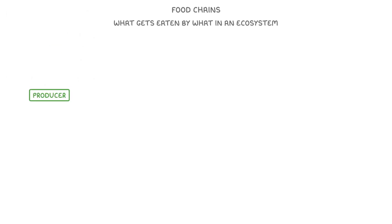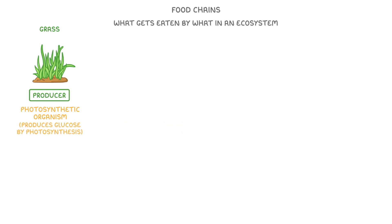All food chains start with a producer, which is some kind of photosynthetic organism, like a green plant or alga. We're going to use grass here as our example. All photosynthetic means is that the organism can produce glucose by photosynthesis, so they're effectively using the sun's energy to make biological molecules. And once these molecules have been incorporated into the plant, we call it biomass.